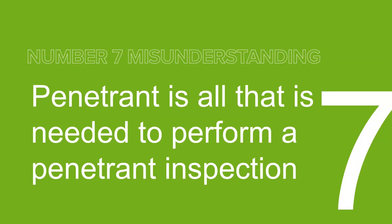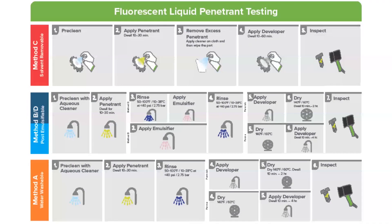Misunderstanding: penetrant is all that is needed to perform a penetrant inspection. Penetrant is certainly the star of the show, but in most applications a pre-cleaner and developer will also be used. UV lighting is needed for fluorescent penetrant inspection. Emulsifiers are used in method B and method D processes. There are limited applications where only penetrant is used, such as certain magnesium or aluminum castings — but specifications must be reviewed to confirm which materials are required.